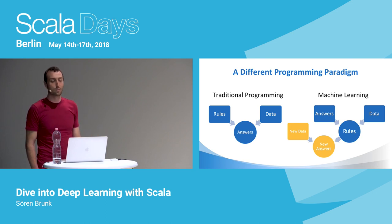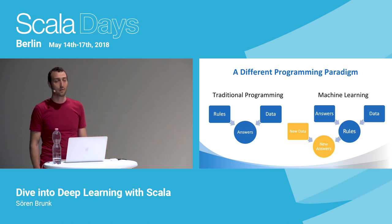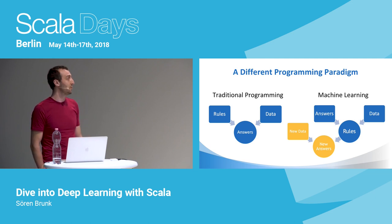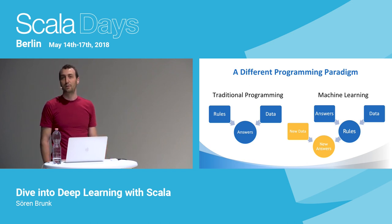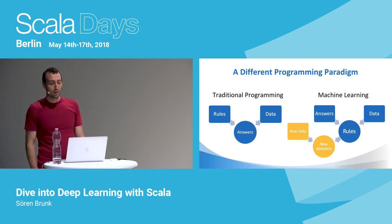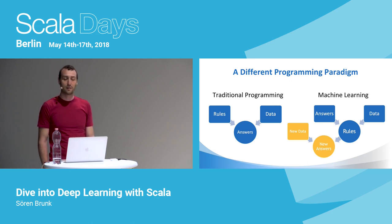In traditional programming, we write rules — using different abstractions, languages, and paradigms — and we apply those rules to some input data to get answers. That works fine in most cases, but sometimes it doesn't because we just don't know how to write the rules. Recognizing faces, for instance, seems very easy for us humans, but developing an algorithm turns out to be a very difficult problem. In machine learning, we do not write the rules ourselves. We create a system that can learn the rules from so-called training data — example data with given answers — and then apply those rules to new data to get new answers.